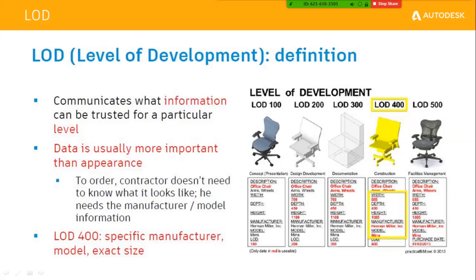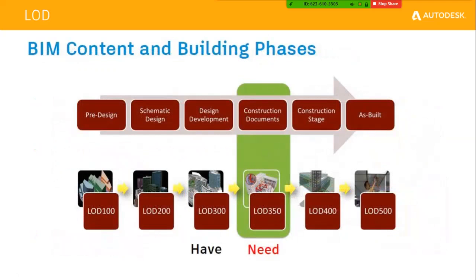The BIM phases start from pre-design at LOD 100, then schematic design, design and development with building analysis, then the construction stage requiring construction documents at LOD 400, and finally the as-built stage at LOD 500. The manufacturer's entry point is at LOD 350, where it carries the necessary information of a manufacturing model.